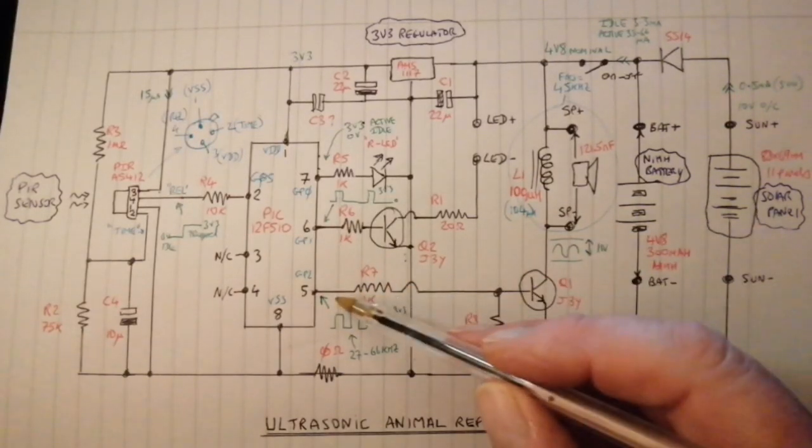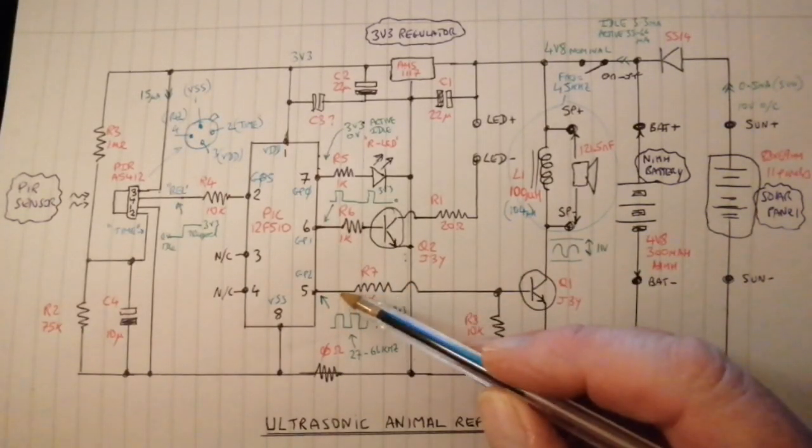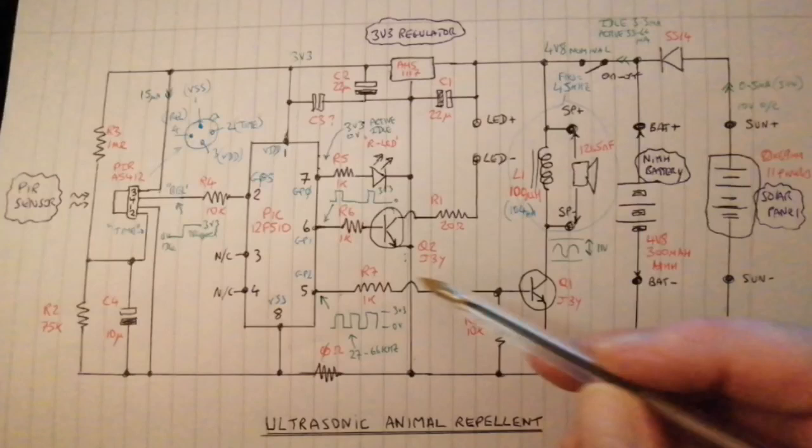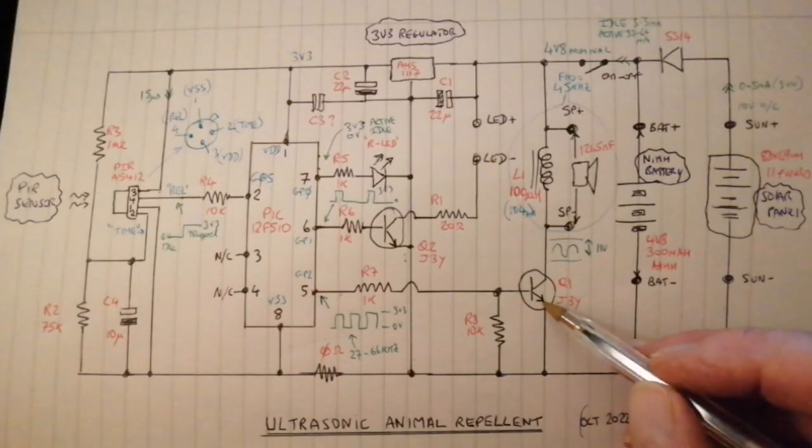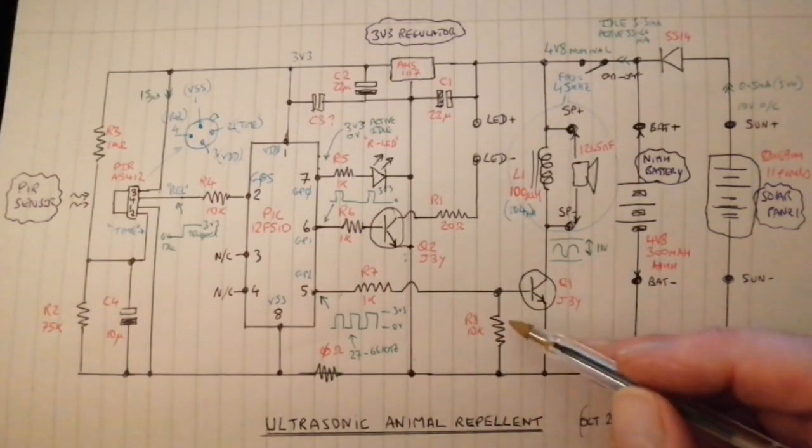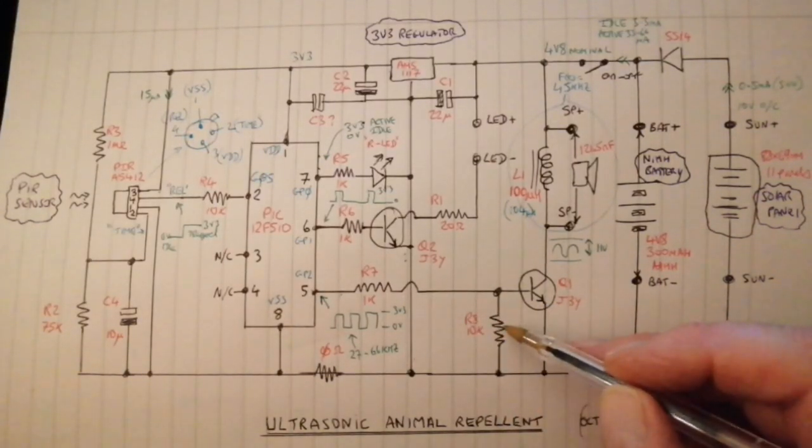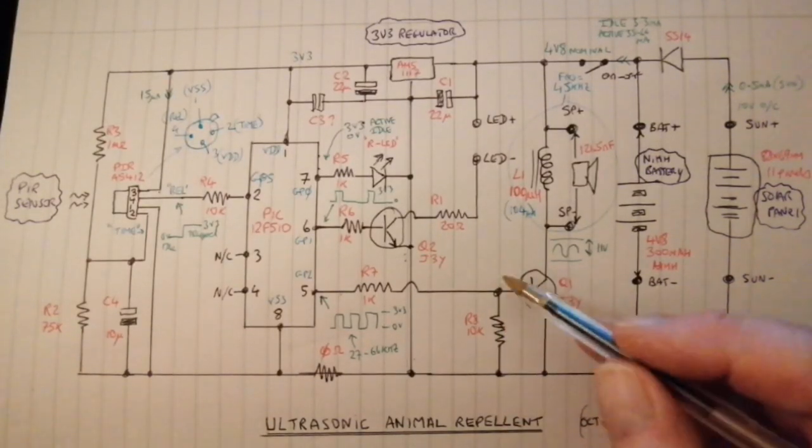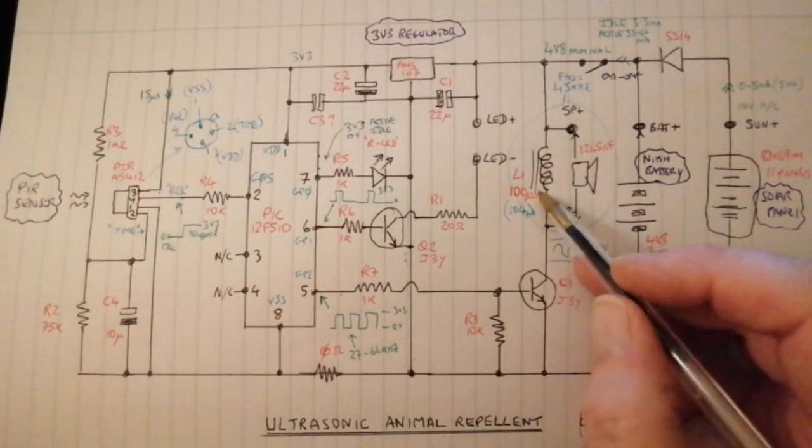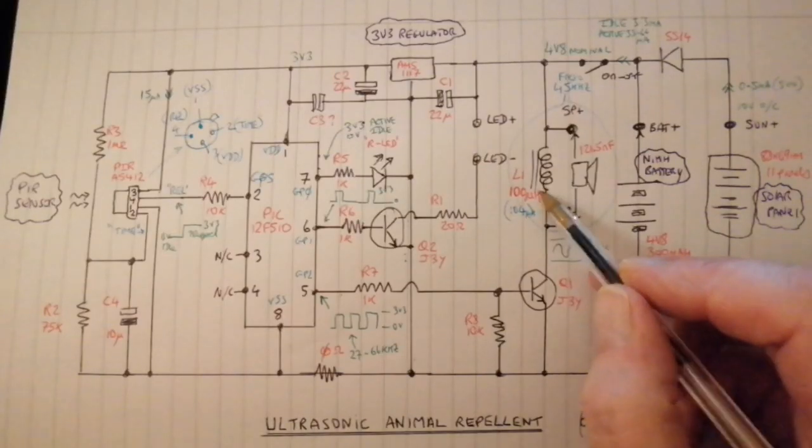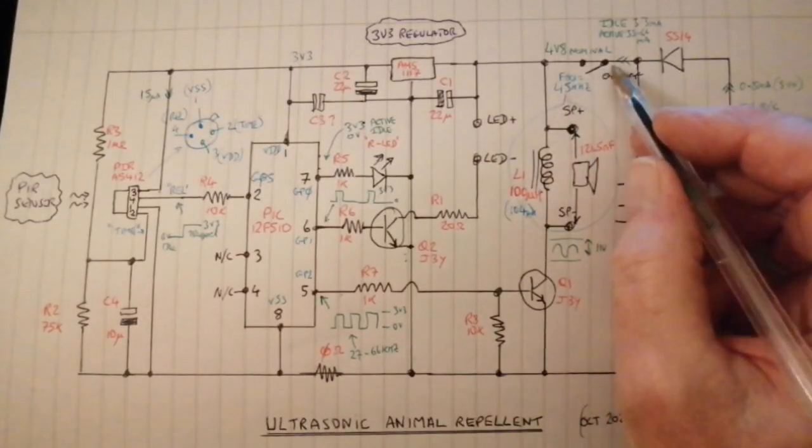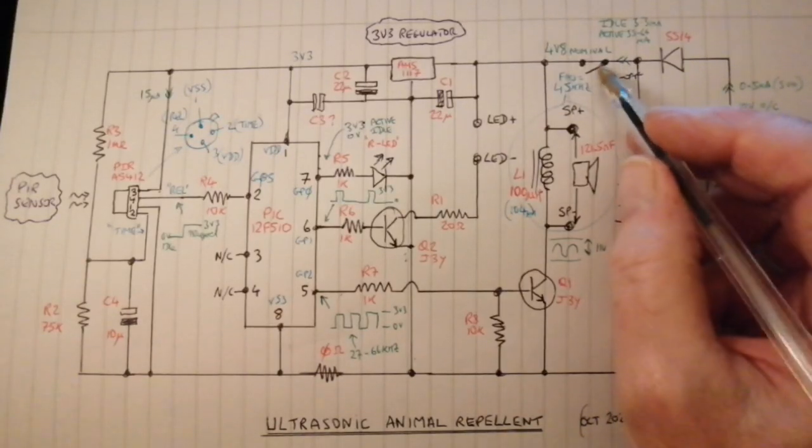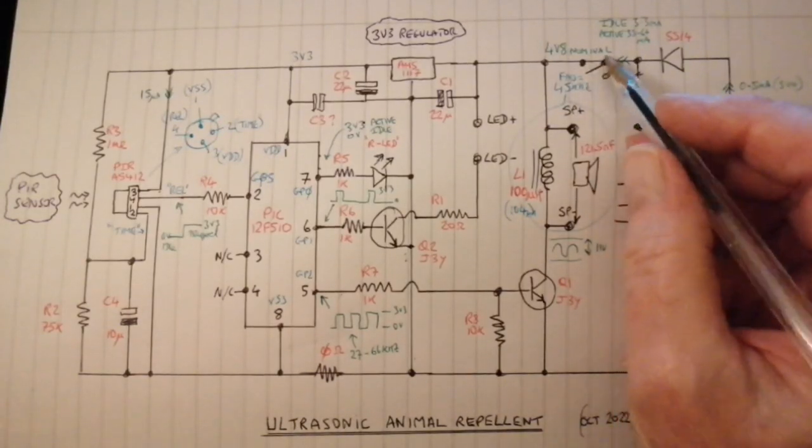The GP2 output of the PIC feeds the base of Q1, which is another J3Y general purpose silicon via R7, and it has a pull down of 10K. The collector goes to the one end of L1, and the other end of L1 goes up to the positive supply. I forgot to mention the on-off switch - I drew it in as an afterthought.